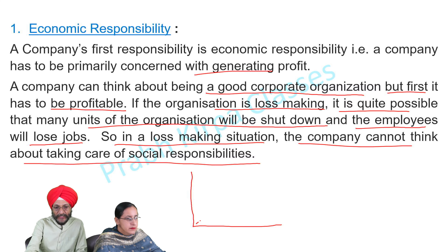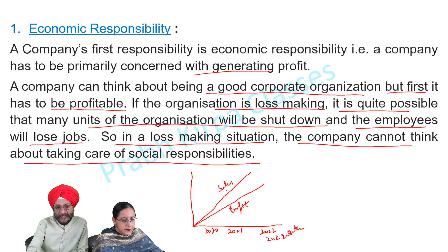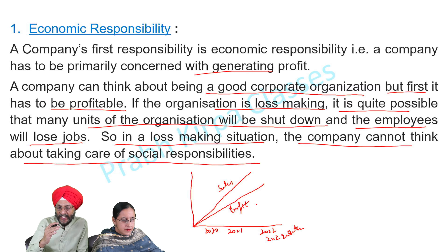So in a loss-making situation, the company cannot think about taking care of social responsibilities. The sales of the organization are increasing year by year, and its profit is also increasing year by year. In this picture, you can see that the sales are increasing and profits are increasing year on year. Such an organization which is continuously making profits can think about spending some money or making donations in the form of corporate social responsibility.